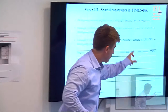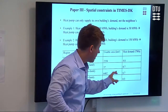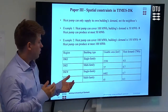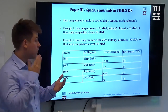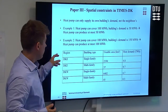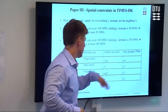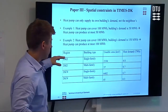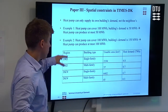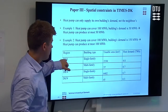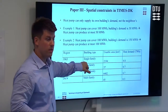Results for all parcels in Denmark are aggregated based on region and building type, and these numbers are fed into TIMES. The model then knows it can only supply, for example, 4.8 TWh of heat from residential heat pumps in Denmark East single-family houses.